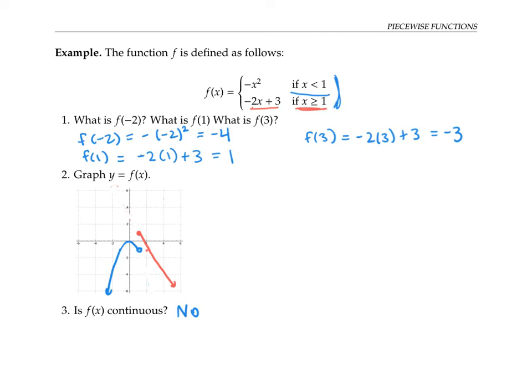However, it's possible to have a piecewise defined function that has no discontinuity if the two pieces happen to line up perfectly. For example, if we've changed the function's definition slightly, I'll call it G of x. It's still negative x squared when x is less than one, but this time, negative two x plus one if x is bigger than or equal to one.